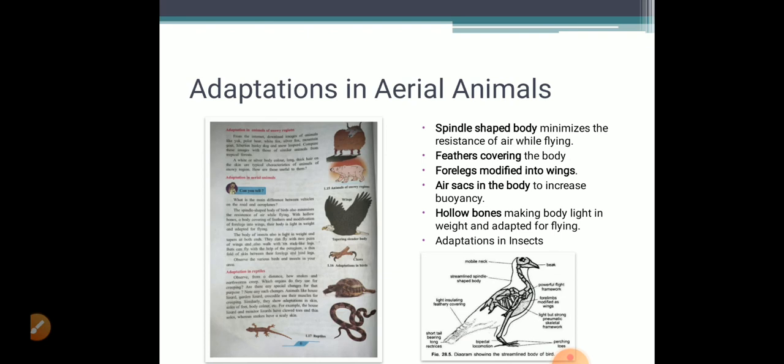The spindle shape body cuts the air and the bird flies. It minimizes the resistance. Resistance means opposition. The four legs are modified into wings which helps them to fly. There are air sacs in their body which increases the buoyancy. Buoyancy means they can float. The hollow bones also make their body light in weight. This helps in adaptation to the aerial mode of life. Observe the various kinds of birds and insects in your area.